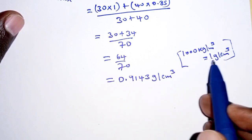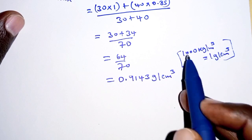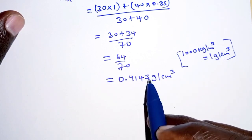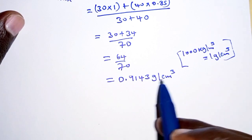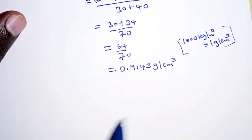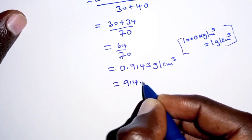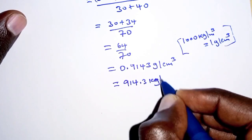Simply say if one gram per cubic centimeter is a thousand kilograms per cubic meter, how about 0.9143 grams per cubic centimeter? So when we multiply this by a thousand, we will get 914.3 kilograms per cubic meter.